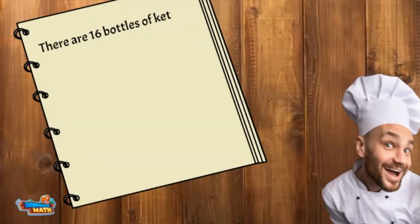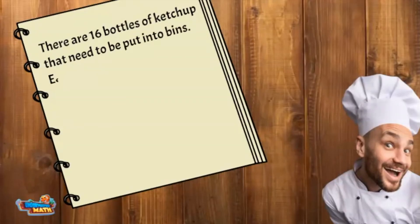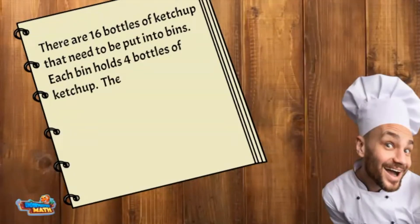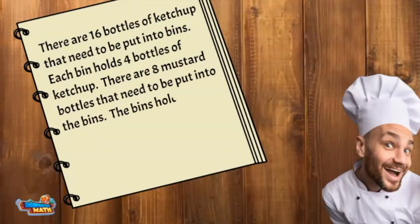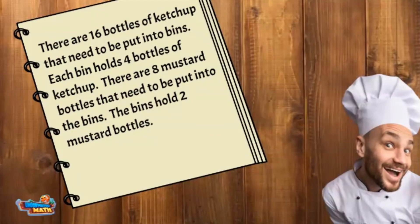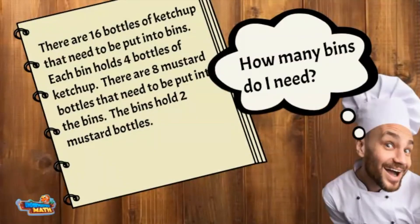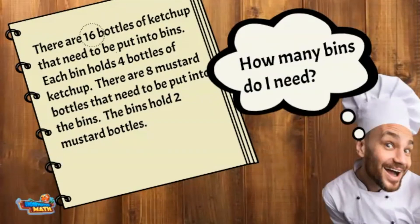On to the next problem. There are 16 bottles of ketchup that need to be put into bins — each bin holds four bottles of ketchup. There are eight mustard bottles that need to be put into the bins, and the bins can hold two mustard bottles. How many bins do I need to store the ketchup and mustard? I will circle all the numbers because there seem to be a lot.